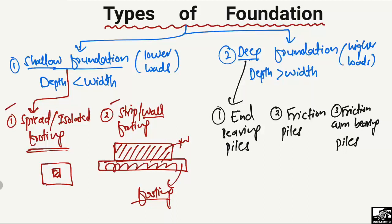End bearing piles are a type of deep foundation where piles are provided beneath the earth surface and there is a hard strata or hard rock beneath. The whole load is taken by this hard rock. The load is transferred from the piles down to the hard rock, so these piles are known as end bearing piles.